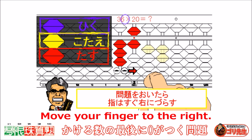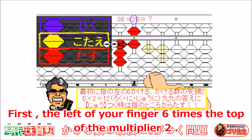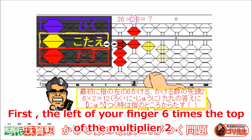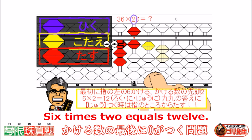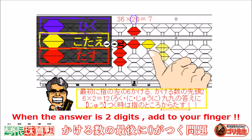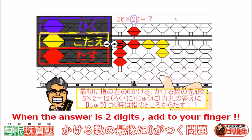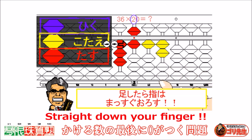Move your finger to the right. First, the left of your finger — six times the top of the multiplier, two. Six times two equals twelve. When the answer is two digits, add two to your finger. Straight down your finger.